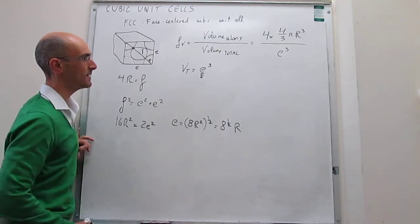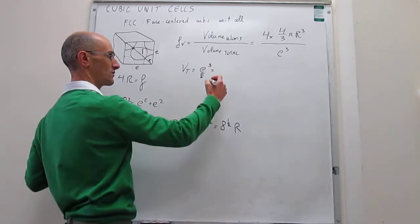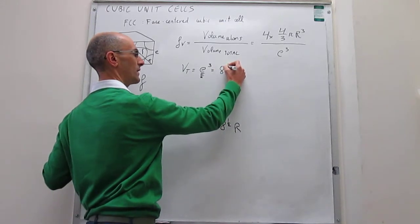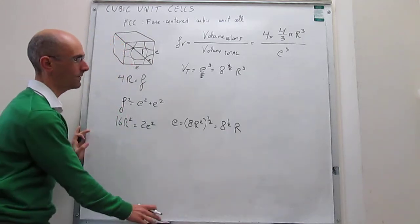So this is the edge, and that means that the volume then is going to be E cubed, so this is going to be 8^(3/2) multiplied by R cubed.